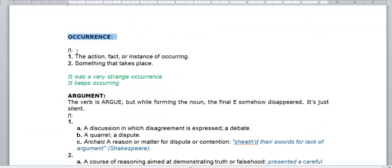Occurrence is a noun. It is the action or fact of or instance of occurring. When something happens. For example, it was a very strange occurrence. A very strange happening. Or it keeps occurring. It keeps happening.